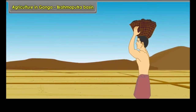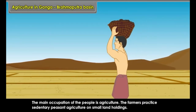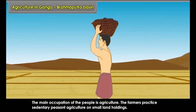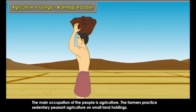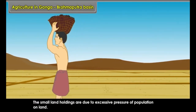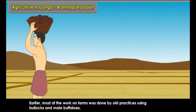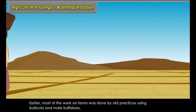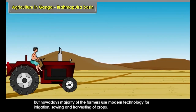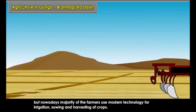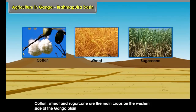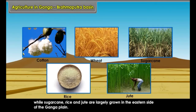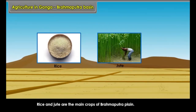The main occupation of the people is agriculture. The farmers practice sedentary peasant agriculture on small land holdings, due to excessive pressure of population on land. Earlier, most farm work was done using bullocks and male buffalos, but nowadays the majority of farmers use modern technology for irrigation, sowing, and harvesting. Cotton, wheat, and sugarcane are the main crops on the western side of the Ganga plain, while sugarcane, rice, and jute are largely grown on the eastern side. Rice and jute are the main crops of the Brahmaputra plain.